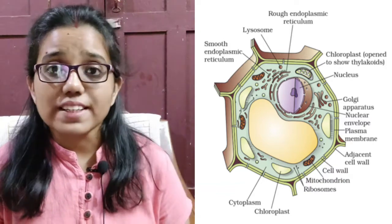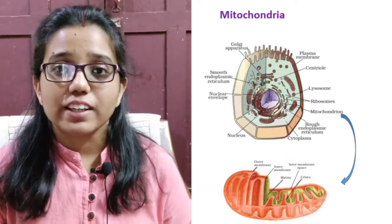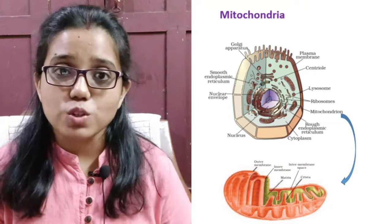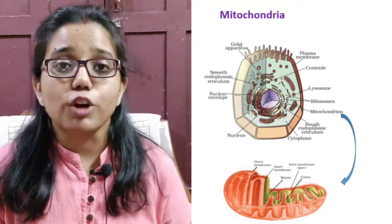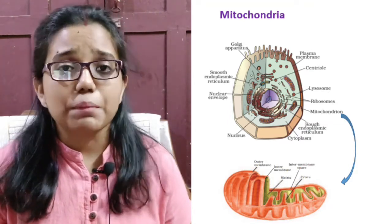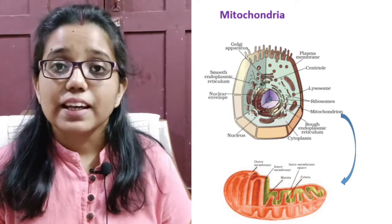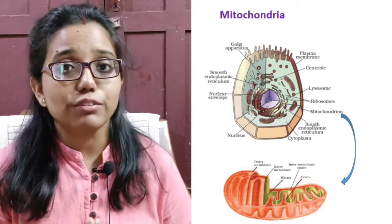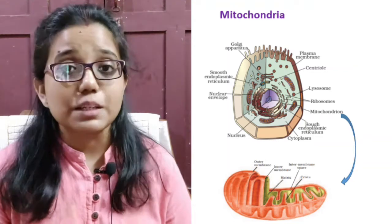One more important cell organelle is mitochondria. It is called the powerhouse of the cell because it provides energy in the form of ATP for various chemical activities of the cell. It has two membranes instead of one, and the inner one is deeply folded.